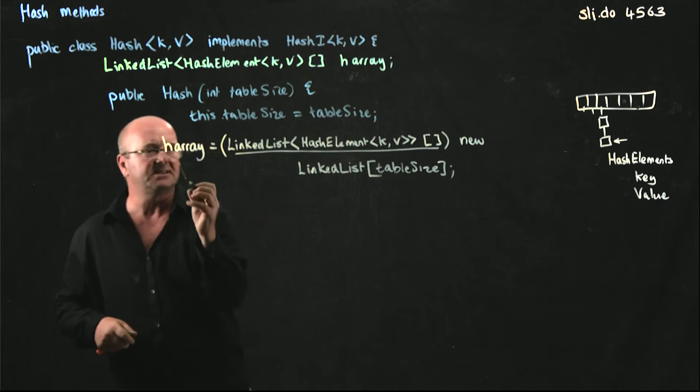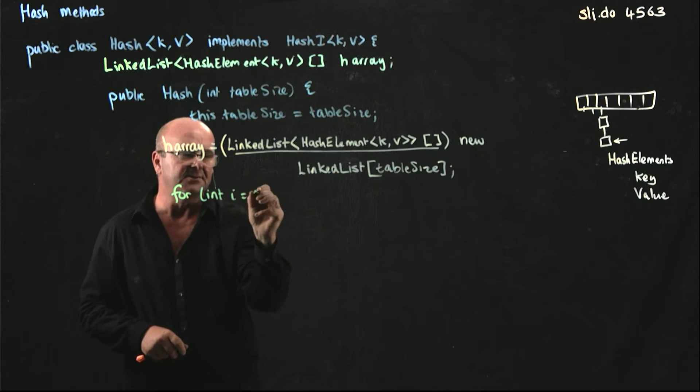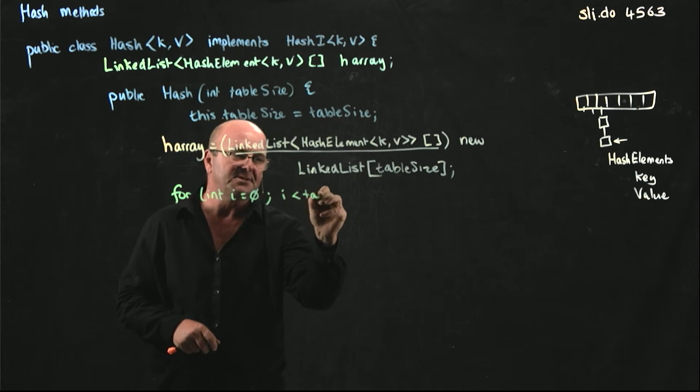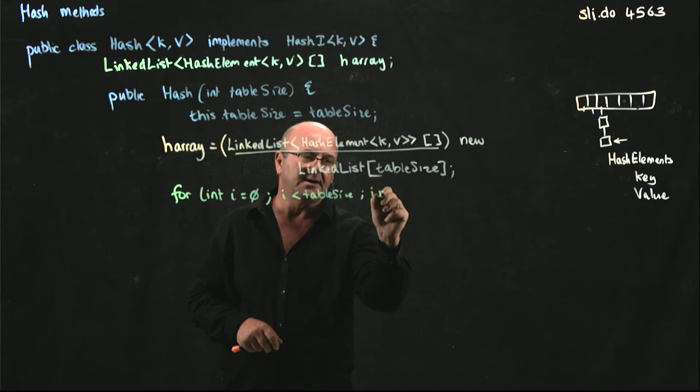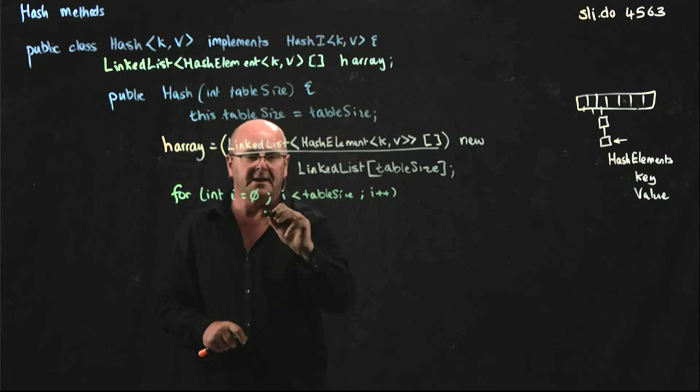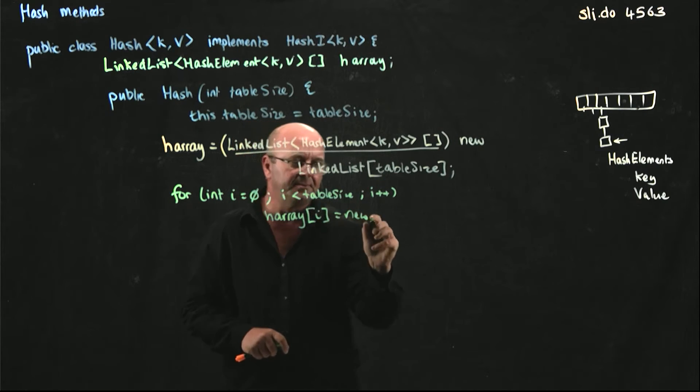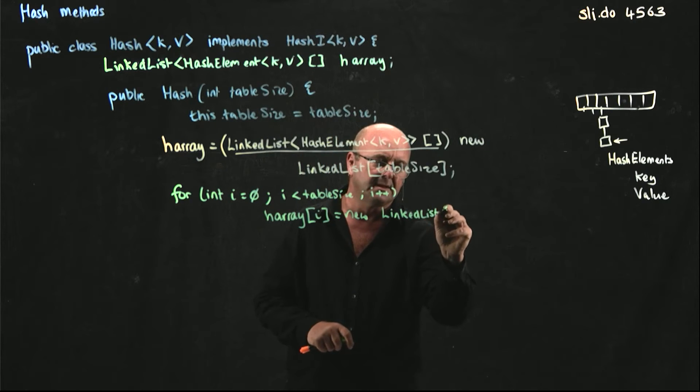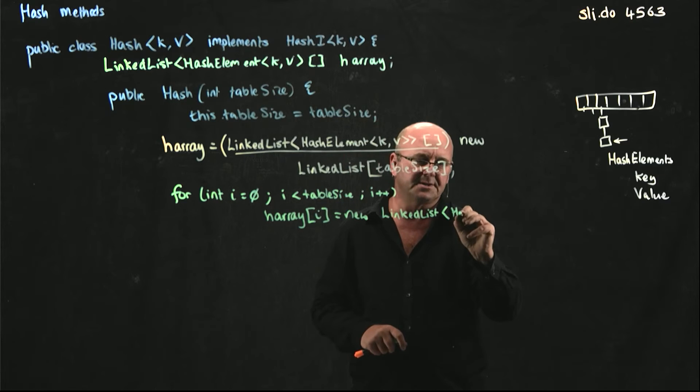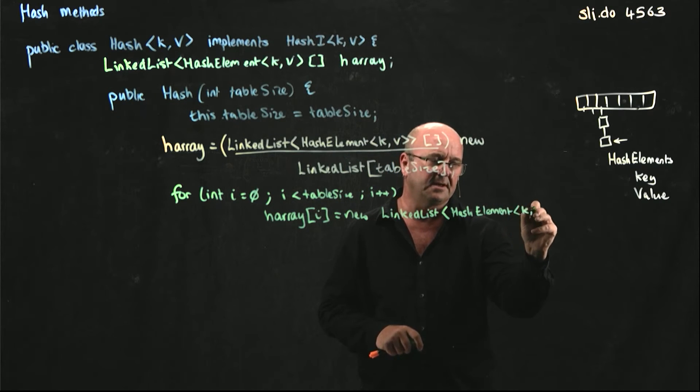And so we can just basically write a little iterator: for int i equals 0, i is less than table size, increment i. And then harray position i is new linked list hash element KV.